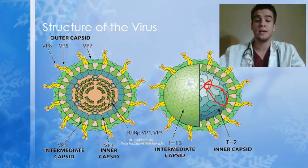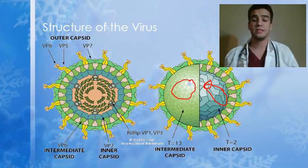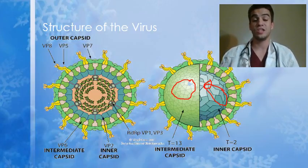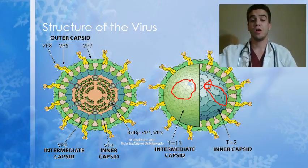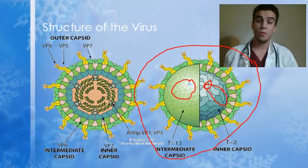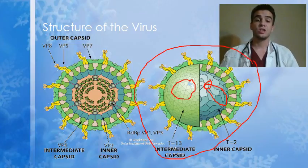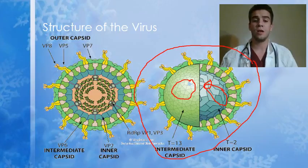The intermediate capsid is similar — it's made up of pentameric hexamers. Each hexamer has six proteins, giving a total of 780 proteins just in the intermediate capsid. The large outer capsid is covered in glycoproteins, which are important for attaching to human cells and transmitting viral information into the cell so that it infects it.